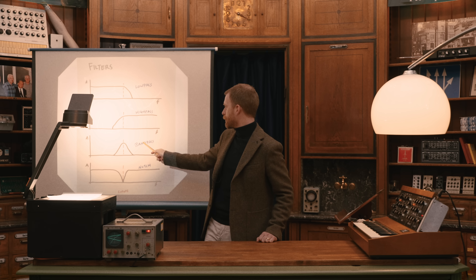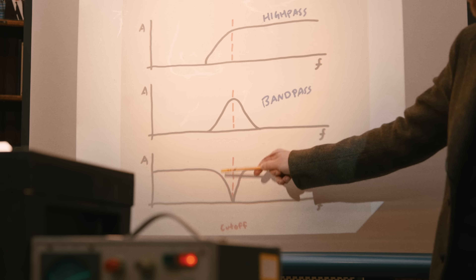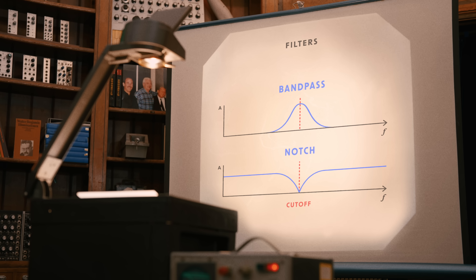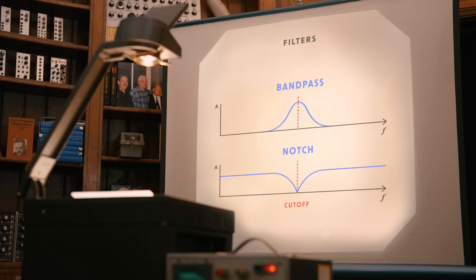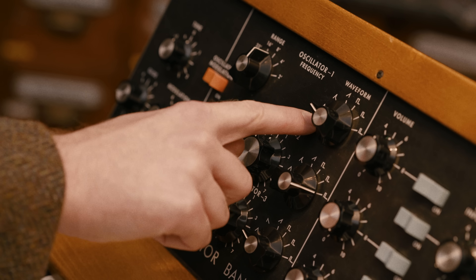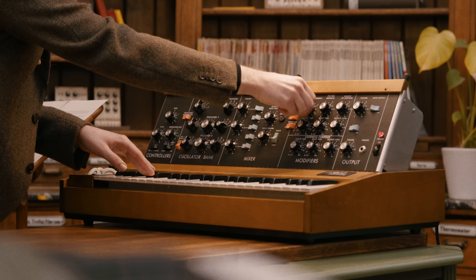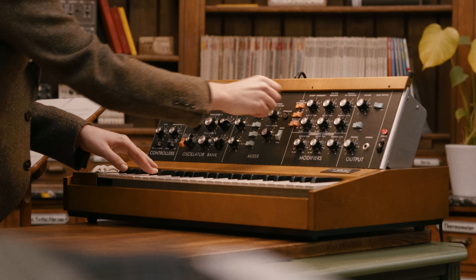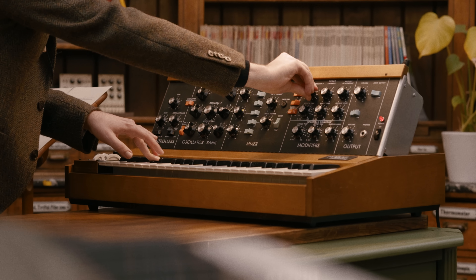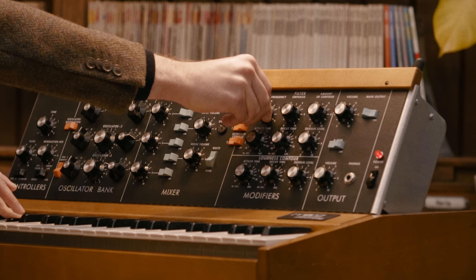A notch filter is the inverse of the bandpass, letting through all frequencies except for those in a small sliver around the cutoff. Bandpass and notch filters are used in a tool called an equalizer, which is used in the mixing process of music or in the three-band EQ of your car stereo. Starting with a sine or a triangle wave doesn't make much sense since the filter doesn't have very many frequencies to latch onto and filter out. But if we start with a buzzy wave such as the sawtooth, the filter has a lot of harmonic content from which to latch onto and sculpt our sound.